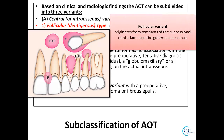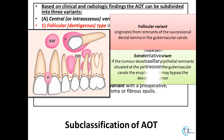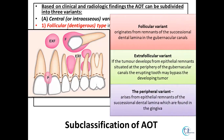The follicular type originates from the remnants of the dental lamina residing in the gubernacular canal. The extrafollicular variant develops from remnants situated in the periphery of the canal, in which the erupting tooth bypasses the developing tumour. The peripheral variant develops from remnants residing in the gingiva.